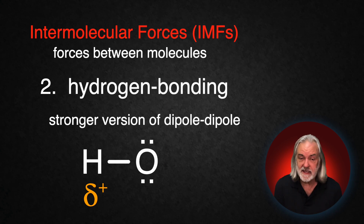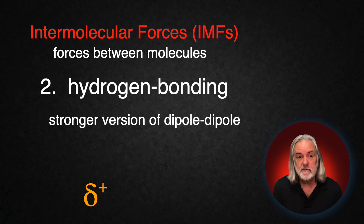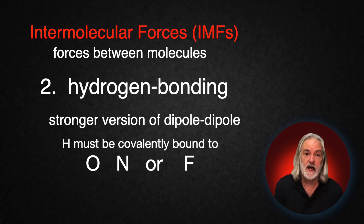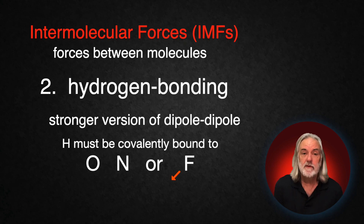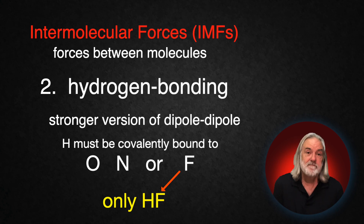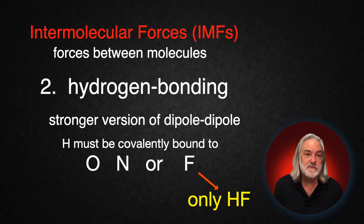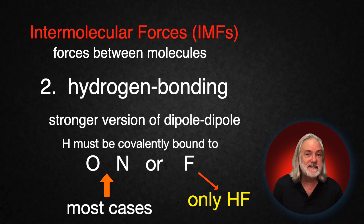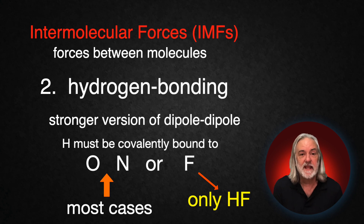Hydrogen bonding works only when the hydrogen is attached to an oxygen, a nitrogen, or a fluorine. The fluorine one is one single case — it's just hydrogen fluoride, and then you're done. There are no other cases, so that's just one molecule, but we needed to include it. Really, where all the hydrogen bonding molecules are is when the hydrogen is attached to an oxygen or a nitrogen, and there's an entire classification of molecules in organic chemistry including those two things, so those will be covered when we get to organic chemistry.